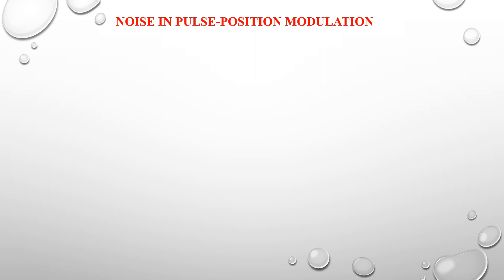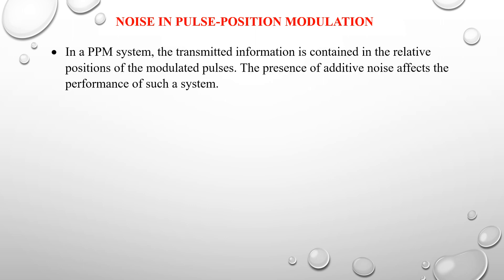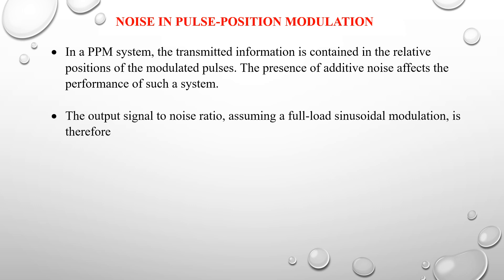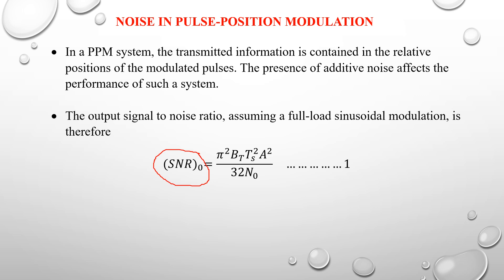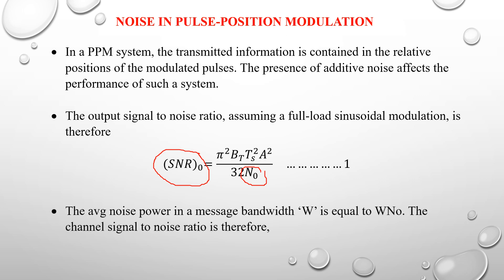In a PPM system, the transmitted information is contained in the relative position of the modulated pulses. The presence of additive noise affects the performance of such a system. The SNR output, assuming a full-load sinusoidal modulation, is: SNR_output = (π² · B_T · T_s² · A²) / (32 · N₀), where B_T is the transmission bandwidth, T_s is the sampling time, A is the signal amplitude, and N₀ is the noise spectral density.